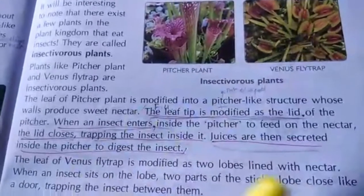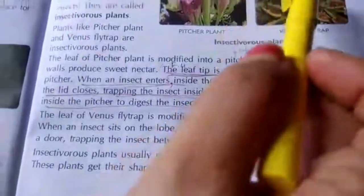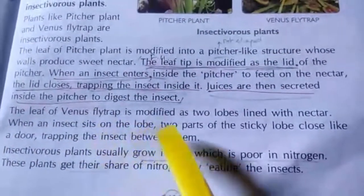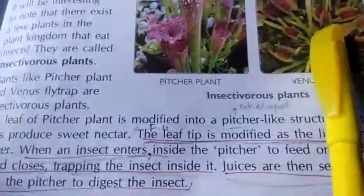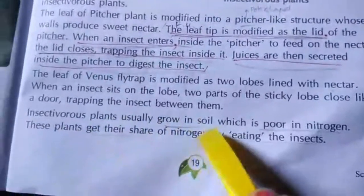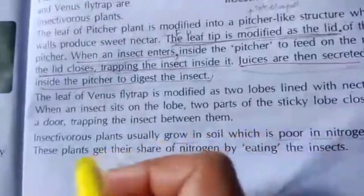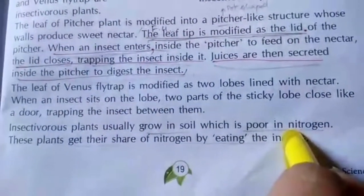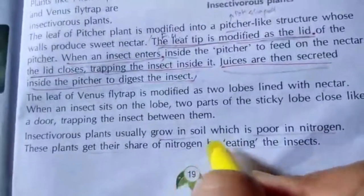The next type is the Venus flytrap. The leaf of the Venus flytrap is modified into two lobes lined with nectar. When an insect sits on a lobe, the two sticky lobes close like a door, trapping the insect between them. Insectivorous plants grow in soil that is poor in nitrogen. They get their share of nitrogen by eating insects — that is how they survive.